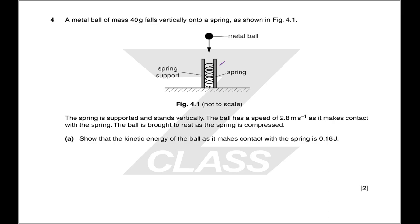Question four. A metal ball of mass 40 grams falls vertically onto a spring as shown. Show that the kinetic energy of the ball as it makes contact is 0.16 joules. We have a speed, we have a mass, kinetic energy is half mv squared. That's nice and simple.